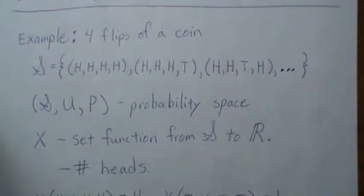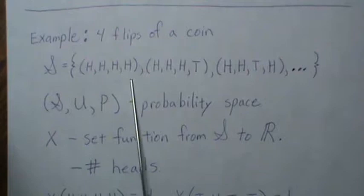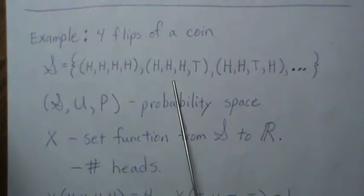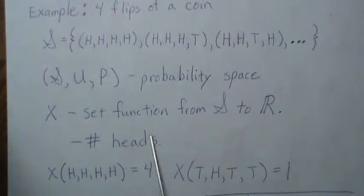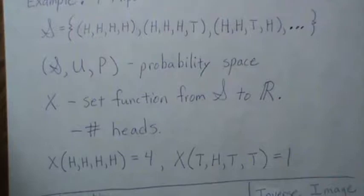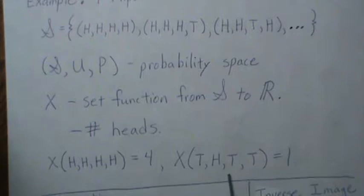Our example is that we're going to flip a coin four times. Our sample space consists of four-tuples of possible outcomes. We have a probability space associated with that, and we're going to let X be a function — a set function from S to R. It takes elements of our sample space and creates a number: the number of heads observed. For example, X of the all-heads four-tuple is 4, and X of a four-tuple with one head is 1.